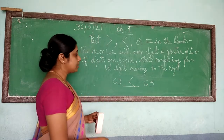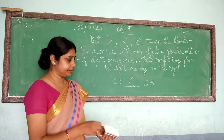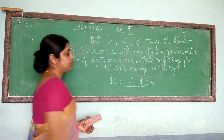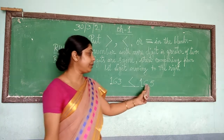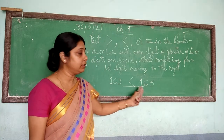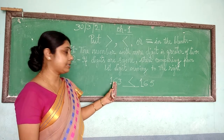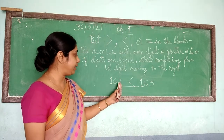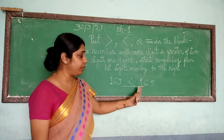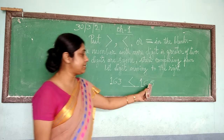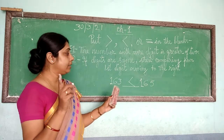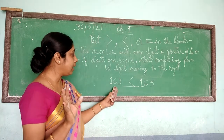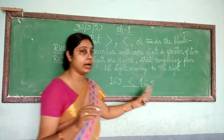Now let us go to 3-digit numbers. Suppose I am adding 1 here — it becomes 163 and this side 165. Both sides have 3 digits. We shift to the next term: 6 here, and 6 on this side — same. Now we go to the third digit: here it is 3, and this side is 5. That means this side is greater. We put the open side facing the greater number. So 163 is less than 165.